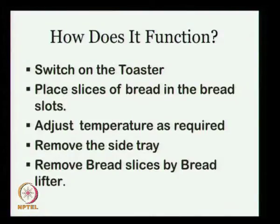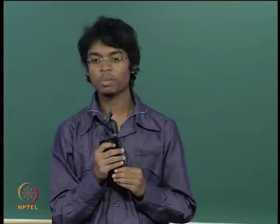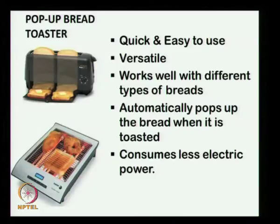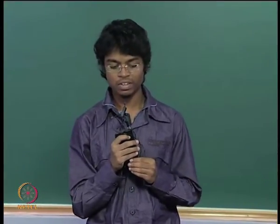Moving to the functionality, just switch on the toaster and place the slices of the bread in the bread slots and you can adjust the temperature as required. Just remove the side tray and you can remove the bread slices by using the bread lifter. But it has many disadvantages. For example, in our mess, not every student is capable or do not have sufficient time to toast their bread slices. So instead of using the same thing, we can move to the pop-up toaster which is a new variety. It is quick and it is very easy to use. It is versatile and it works well with different kinds of breads. It automatically pops up the bread once the toasting is finished and it consumes less power than the previous one. The bottom one as shown in the slide is an open-top toaster and we can toast breads and barbecue items in this. Thank you. Have a nice day.